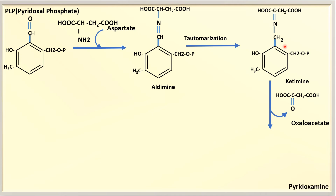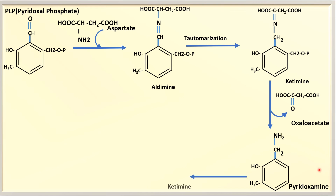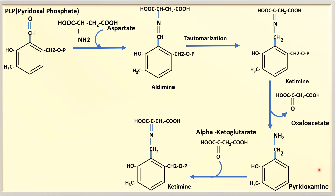After release of oxaloacetate, pyridoxamine is formed. It is called pyridoxamine because an amino group is now attached where the aldehyde group previously was. This pyridoxamine then reacts with the second substrate, alpha-ketoglutarate, to form a ketimine.